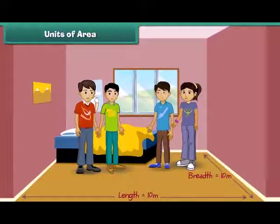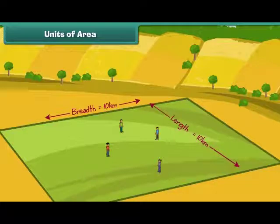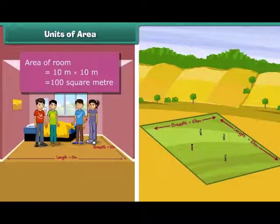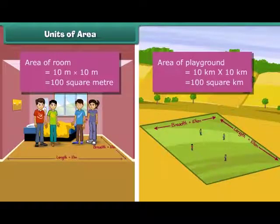How many children can stand in a square room of side 10 meters, and how many in a square playground of side 10 kilometers? Clearly, more children can be accommodated in the playground. The area of the room is 100 square meters, while the area of the playground is 100 square kilometers. Thus, square kilometer is a bigger unit for measuring area than square meter.